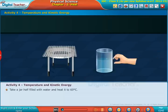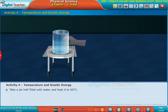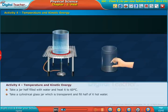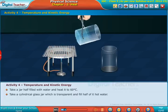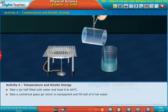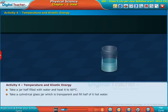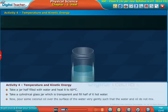Take a jar half filled with water and heat it to 60 degrees Celsius. Take a cylindrical glass jar which is transparent and fill half of it with hot water. Now pour some coconut oil over the surface of the water very gently such that the water and oil do not mix.